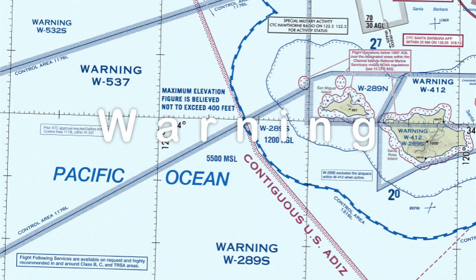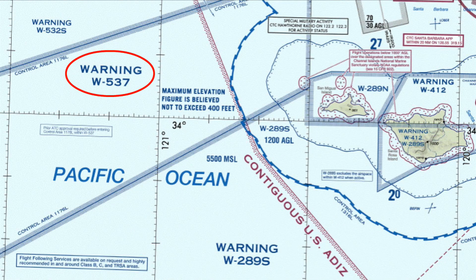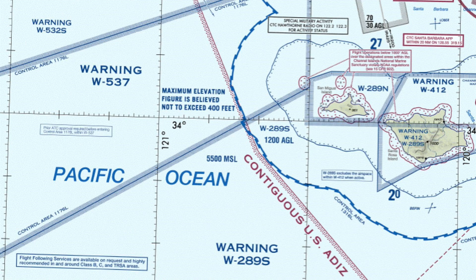A warning area looks similar to a restricted area, though its designator is a W. They contain the very same types of hazards as restricted areas. However, they only exist beyond three miles from the U.S. shore, where the U.S. government does not have full jurisdiction.